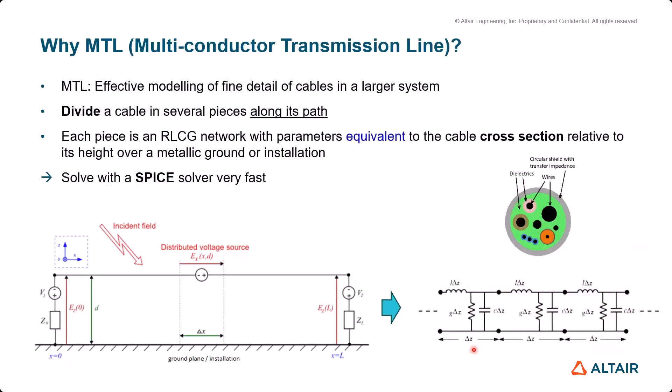The MTL method is preferred because it is an effective modeling tool that can model fine details of cables in a larger system. It divides the cable into several small pieces along its path, and for each piece an RLCG network with equivalent parameters is assigned to the cable cross section. It solves the cables with a SPICE solver, which is very fast. We'll look at an example that compares the two solvers to see how fast the MTL method is.